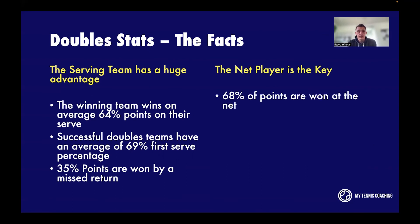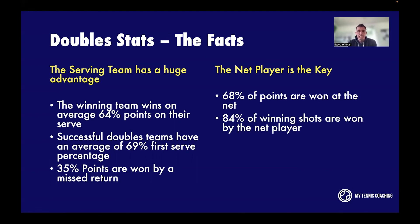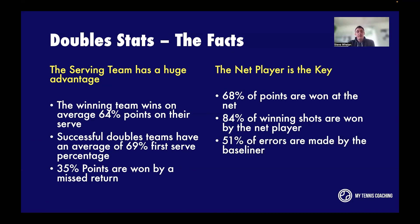The net player is key in doubles: 68% of points in doubles are won at the net. That's a huge takeaway, because most players believe the baseline wins the majority of points — the baseline actually wins only 32%. Furthermore, 84% of winning shots are won by the net player, who is what we call the point-ending zone — in the perfect position to win or lose the point. Meanwhile, 51% of errors are made by the baseliner. All these stats were provided by Craig O'Shaughnessy and Brain Game Tennis.